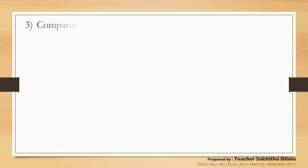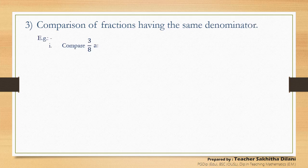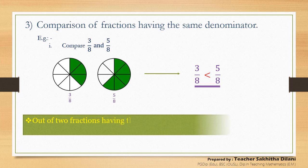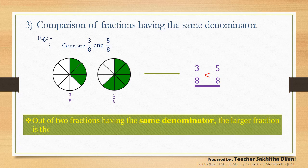Now let's learn the third type: comparison of fractions having the same denominator. First example — compare three-eighths and five-eighths. You can see that in these two fractions the denominators are equal. These two fractions can be represented using diagrams. You can see that the coloured portion in the second diagram is larger than the coloured portion in the first one. Thus, the larger fraction is five-eighths. It can be written as: three-eighths is smaller than five-eighths. In these two fractions the denominators are equal, so we can conclude that out of two fractions having the same denominator, the larger fraction is the fraction with the larger numerator.